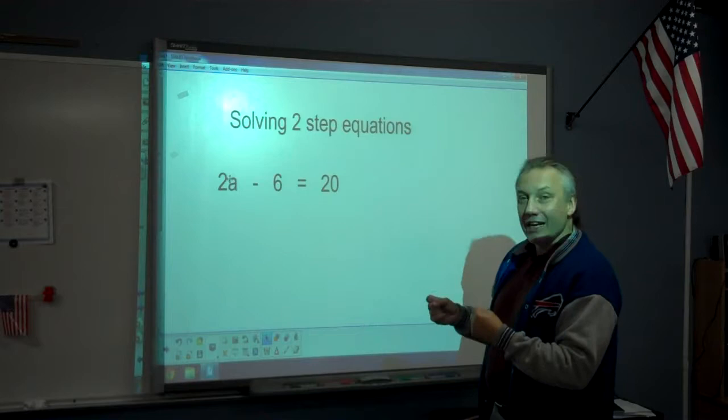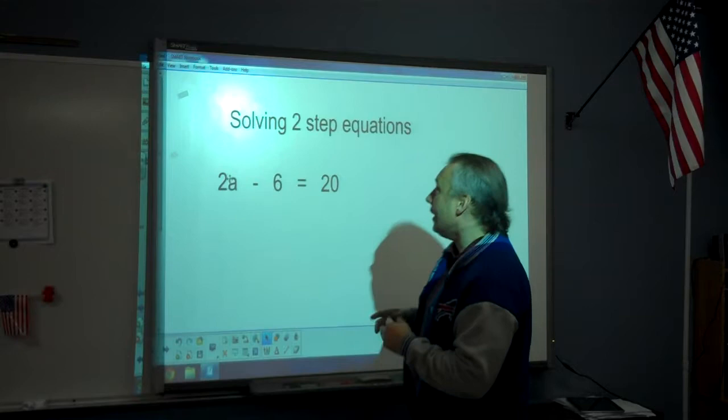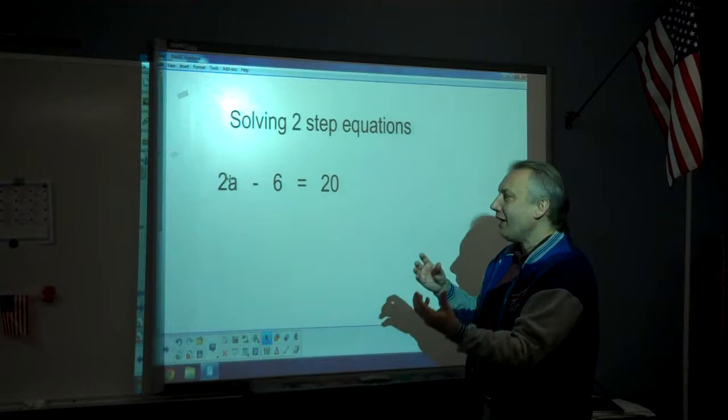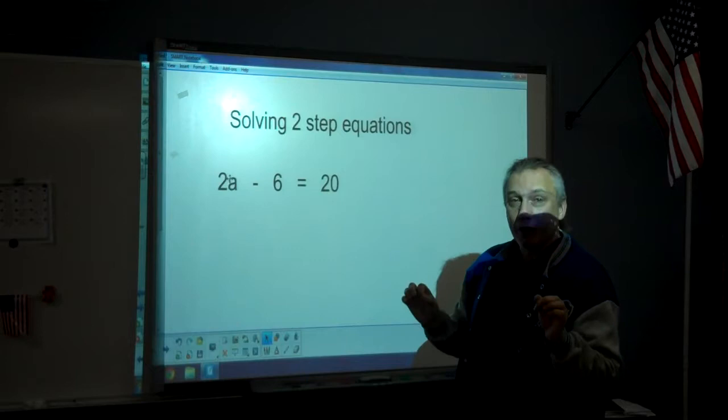If you remember in the last lesson, I talked about isolating the variable. Isolating the variable again means having it alone on one side. A two-step equation is when you have two numbers that you have to get rid of in order to have the variable isolated.